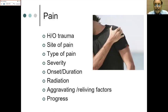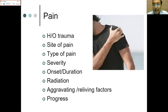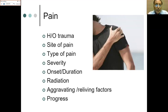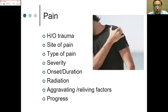Aggravating and relieving factors are important. Pain during abduction at about 90 to 100 degrees indicates impingement, possibly rotator cuff tendinitis. If the same pain is at 140 to 160 degrees, we are looking at acromioclavicular joint pathology. Abduction with external rotation causing pain could indicate instability. Progress of pain also matters — progressively worsening pain means an ongoing process, while improving pain means the pathology is settling.